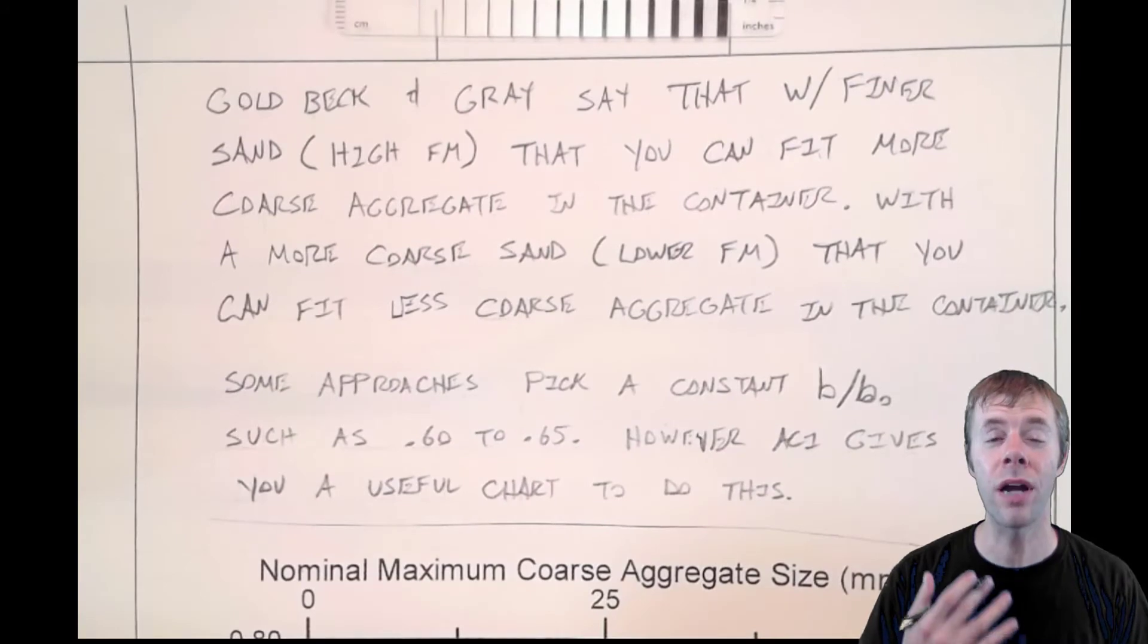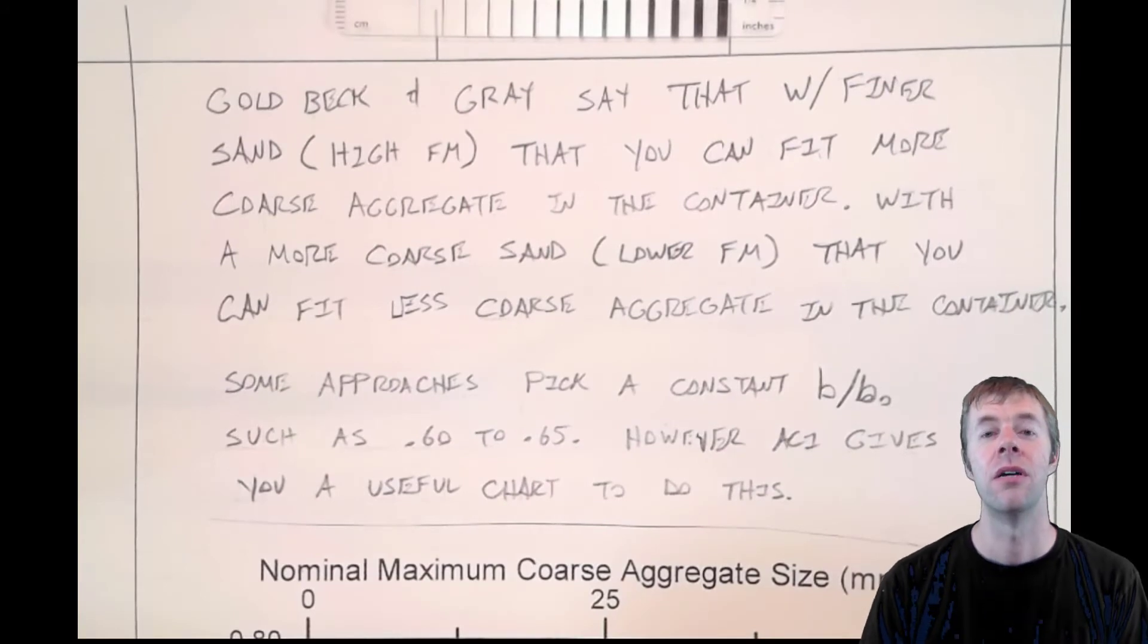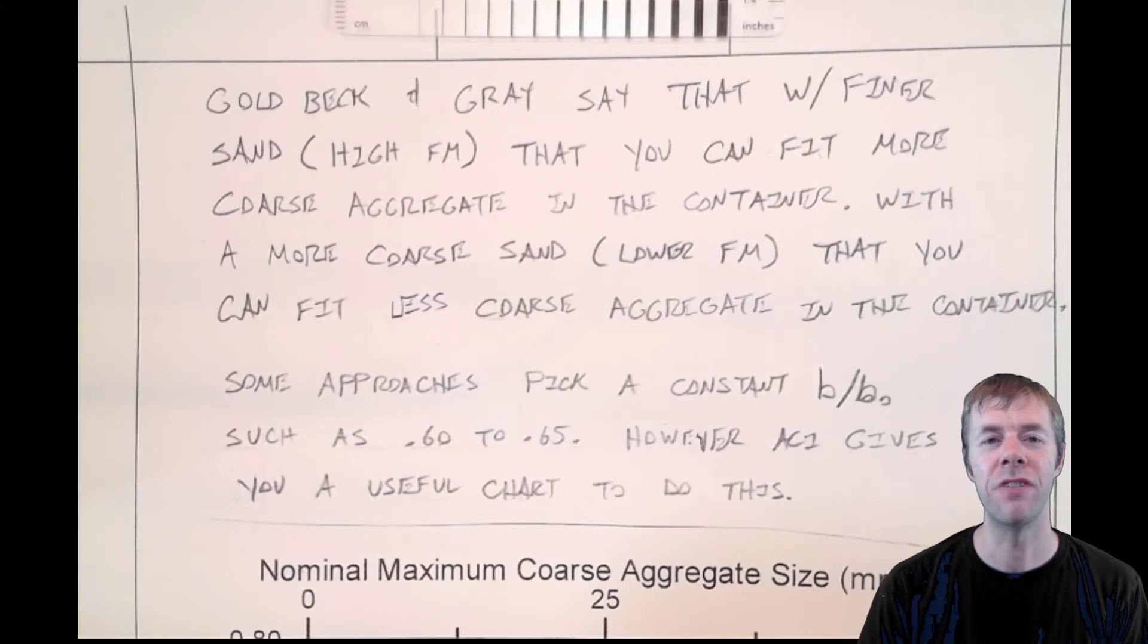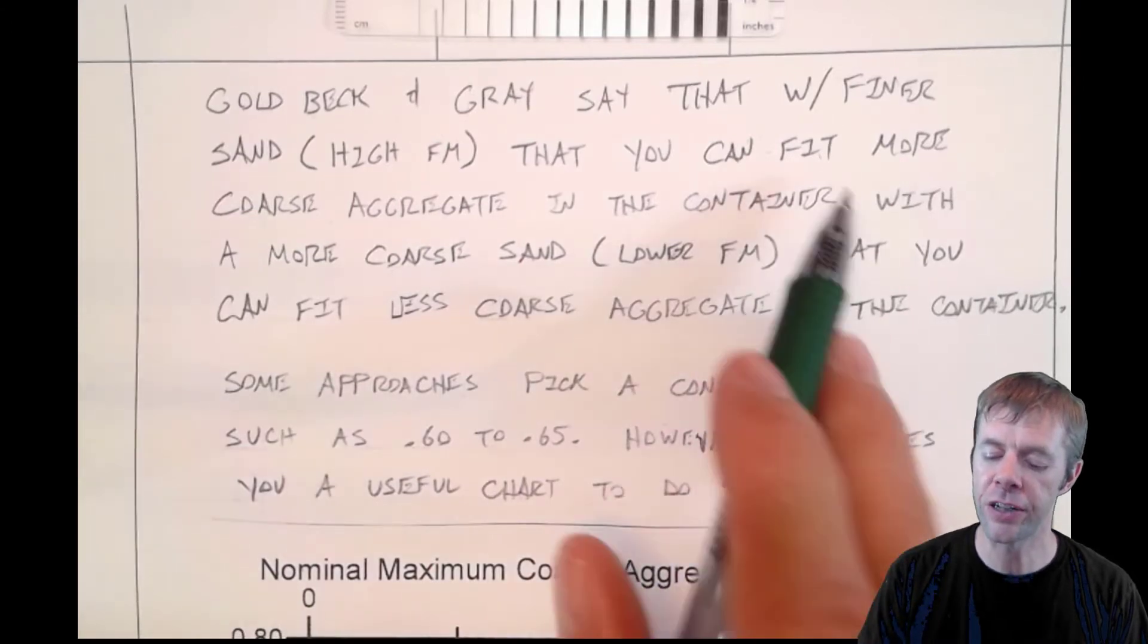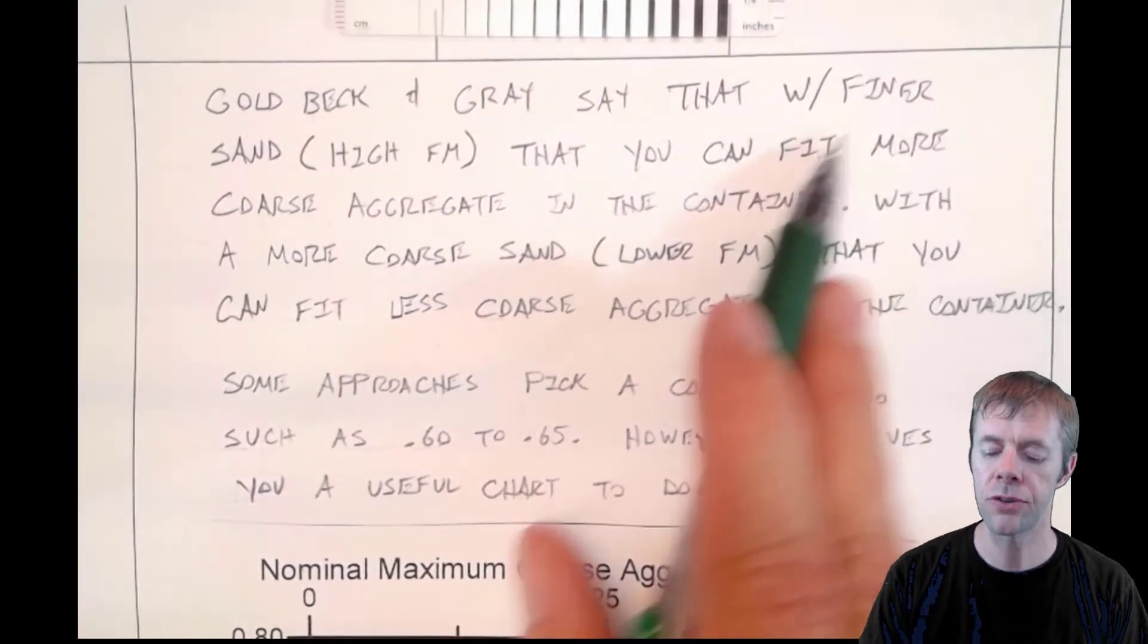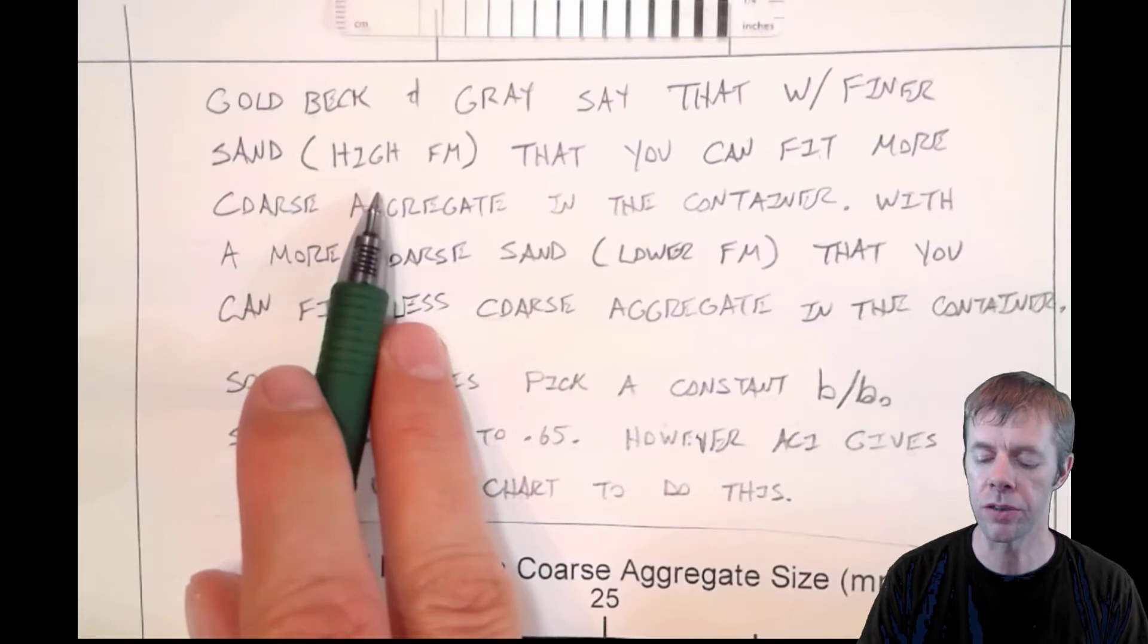So Goldbeck and Gray started by using one aggregate and one sand and investigating what this magical spacing was, what they thought was best for the concrete. Then they started to tweak it. They started to say if you're going to have a finer sand—that's a higher FM, a higher fineness modulus—